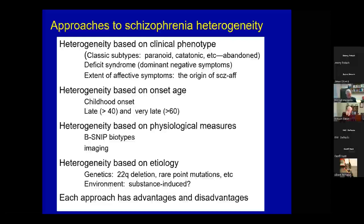Imaging of various types is being used to try to resolve heterogeneity, and we'll come back to that. Heterogeneity based on etiology is also becoming increasingly a matter of interest as genetic studies become more and more robust. For example, the 22Q deletion syndrome commonly causes schizophrenia. There are rare point mutations that greatly increase the risk of schizophrenia. And there are environmental factors like the risk factor of marijuana — is this really something different than schizophrenia unrelated to a substance-induced disorder? Each of these approaches has advantages and disadvantages.